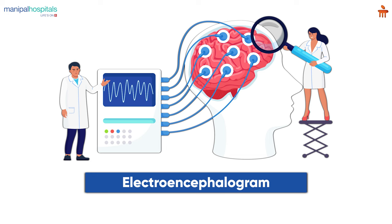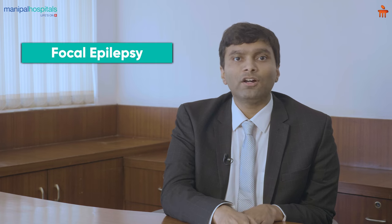From the EEG we get clues whether it is a focal epilepsy or generalized epilepsy, and then we will go for imaging — that is MRI brain — which will give us a clue whether there are any structural issues in the brain, based on our assessment.